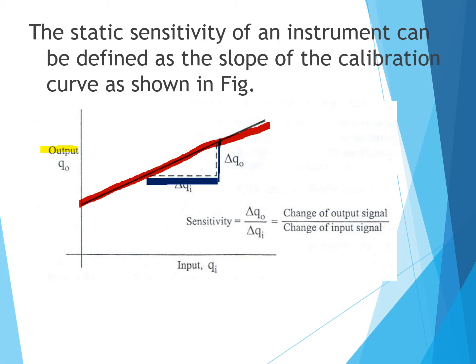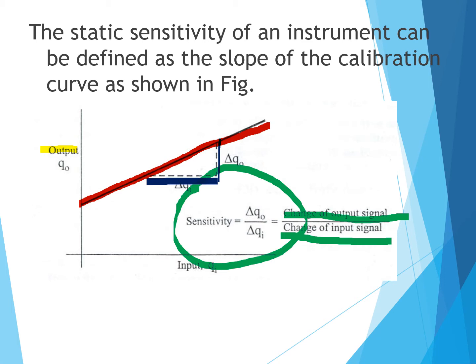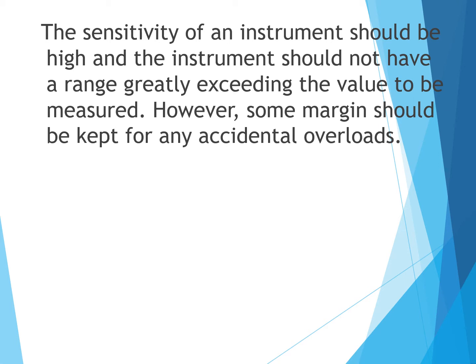In other words, sensitivity equals change in output signal divided by change in input signal. The sensitivity of an instrument should be high, and the instrument should not have a range greatly exceeding the value to be measured.